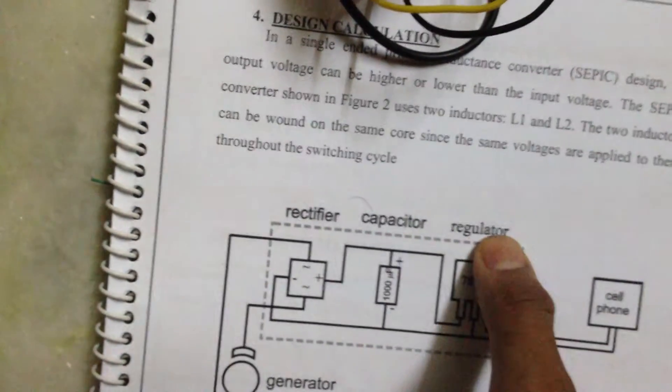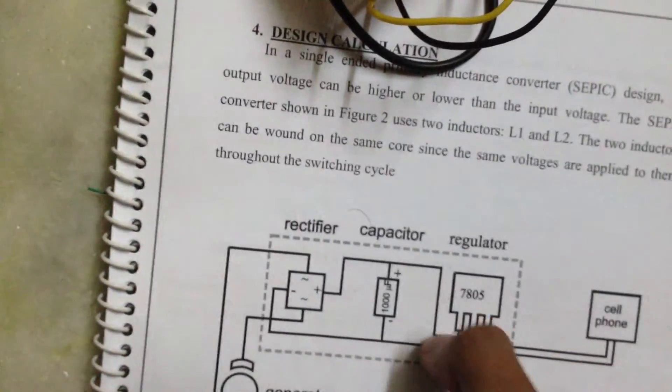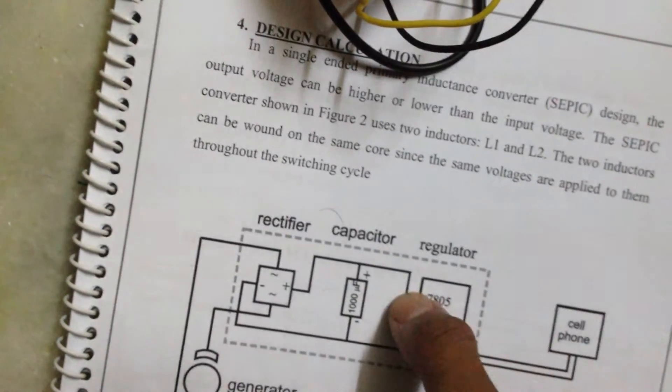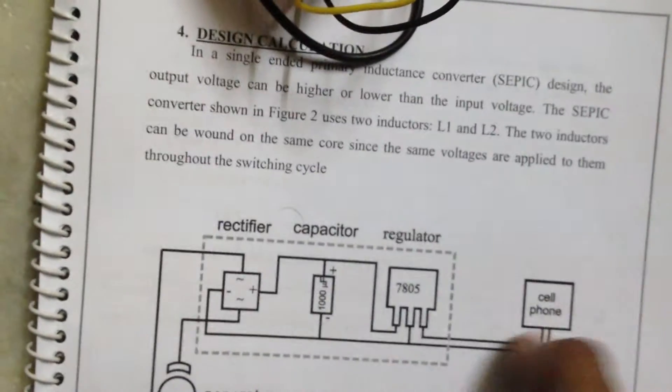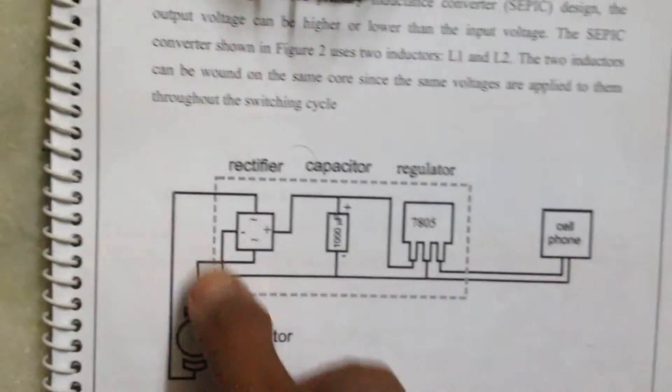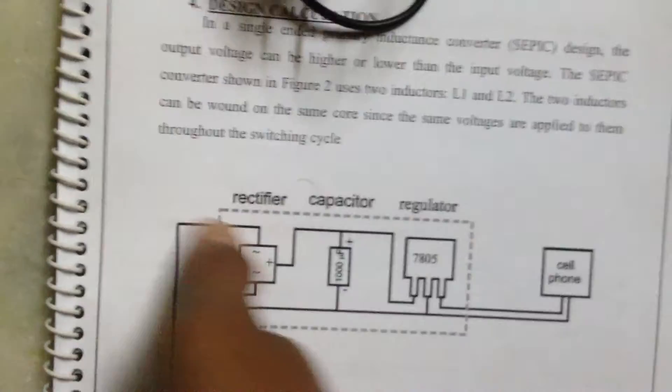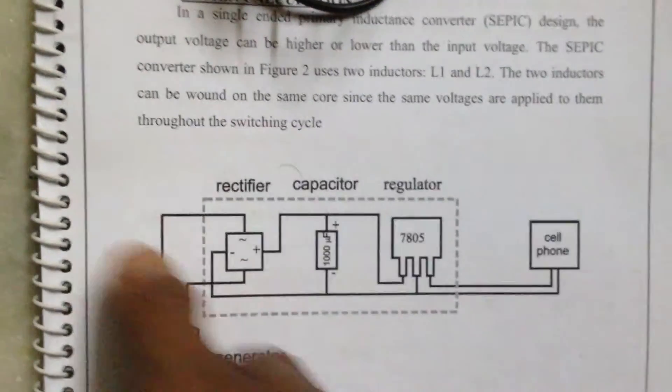This will regulate the voltage to 5V only. As the voltage will be increased when the speed is increased, the fan, and the output will be given to cell phone. So now from this circuit diagram the voltage